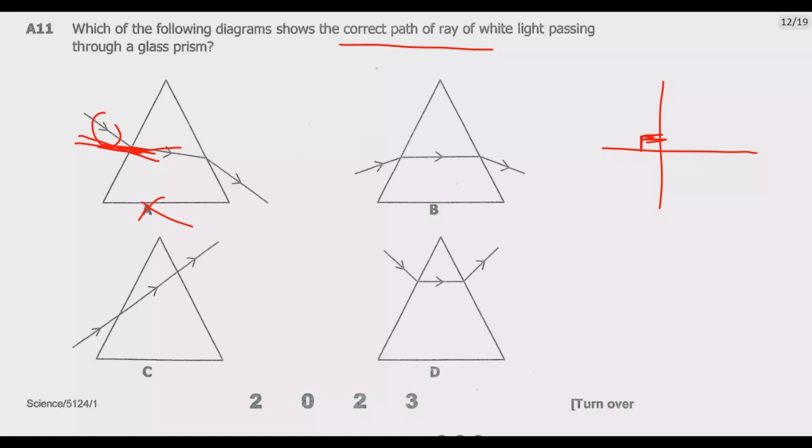If you look at B, if you draw a normal, it will be somewhere at this point which will be perpendicular at 90 degrees. When it's entering, it's bending towards the normal. Then when it's coming out, the normal will be somewhere there which will be 90 degrees. It is away from the normal. So B should be the correct answer.